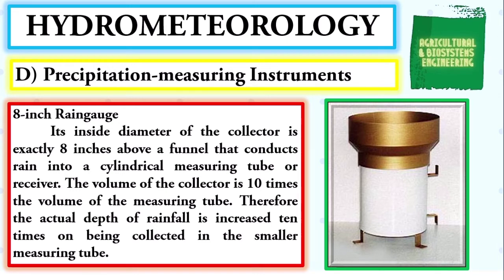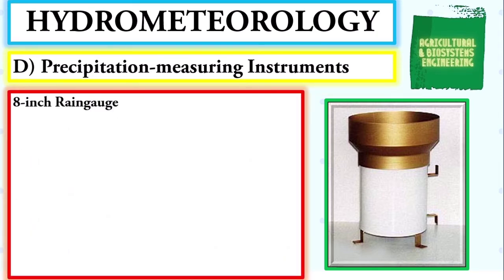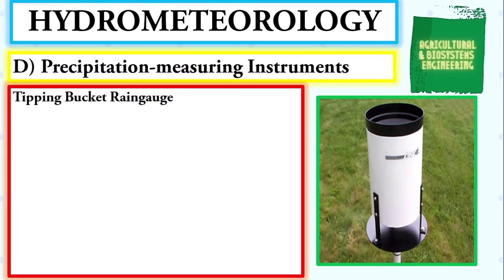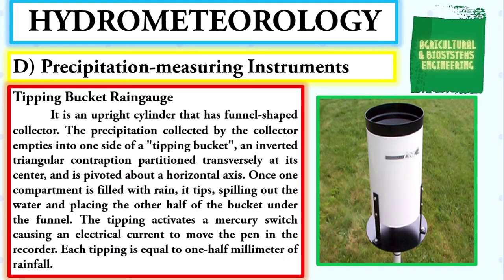First, we have the eight-inch rain gauge. It has an inside diameter of exactly eight inches above a funnel that conducts rain into a cylindrical measuring tube or receiver. The volume of the collector is ten times the volume of the measuring tube, so the actual depth of rainfall is increased ten times in the smaller tube. A thin measuring stick with a magnified scale is used. The measuring tube has a capacity of only two inches (50.8 mm); rainfall exceeding this spills into an overflow can but can be measured by pouring it into the measuring tube.